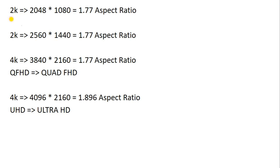There is also a second version of 2K where the TV pixels are 2560×1440 — more pixels than the first version, so slightly better quality. The aspect ratio of this second version is also 1.77. So the second 2K version has more pixels and better quality than the first.